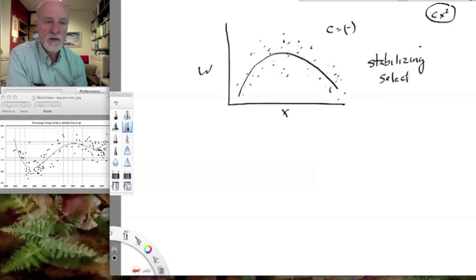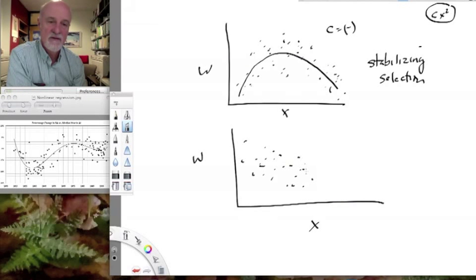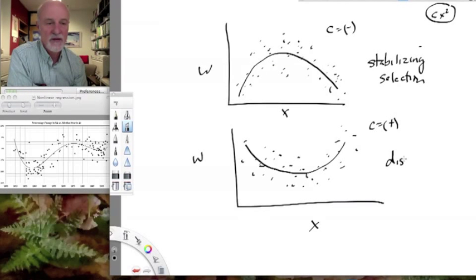What about the opposite pattern? If we had x versus fitness, and the middle values have the lowest values of fitness, and the extremes had relatively high fitness, we could also fit a parabola here, a second-order polynomial, but we would have a positive value of c, and we would have what's called disruptive selection.